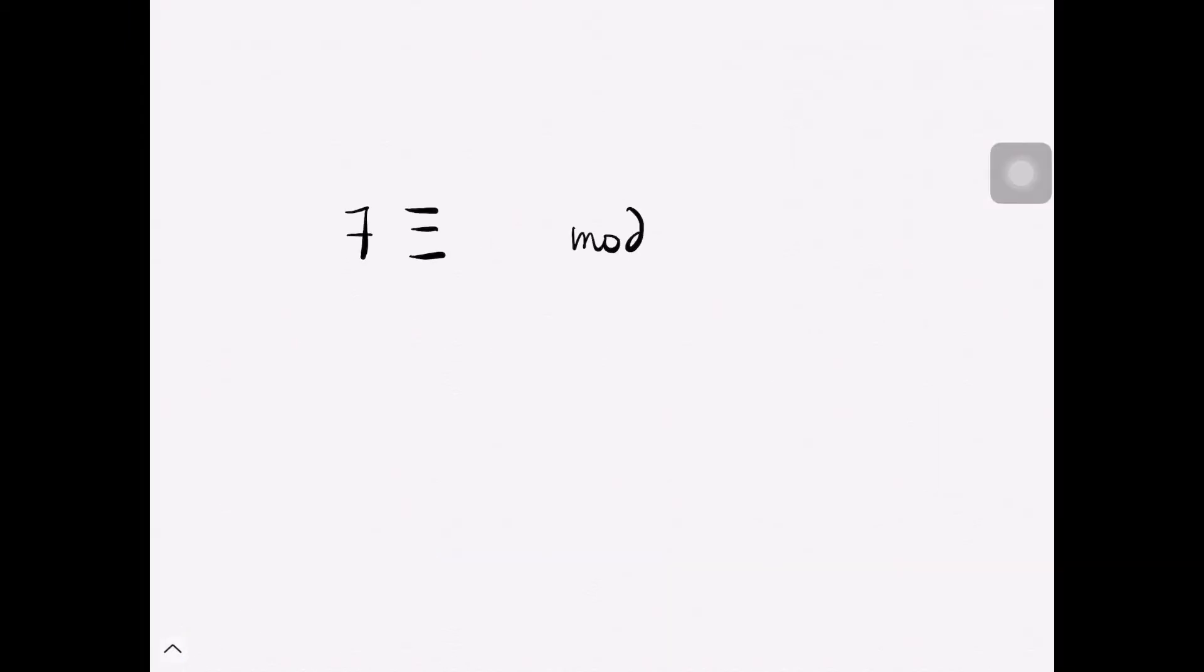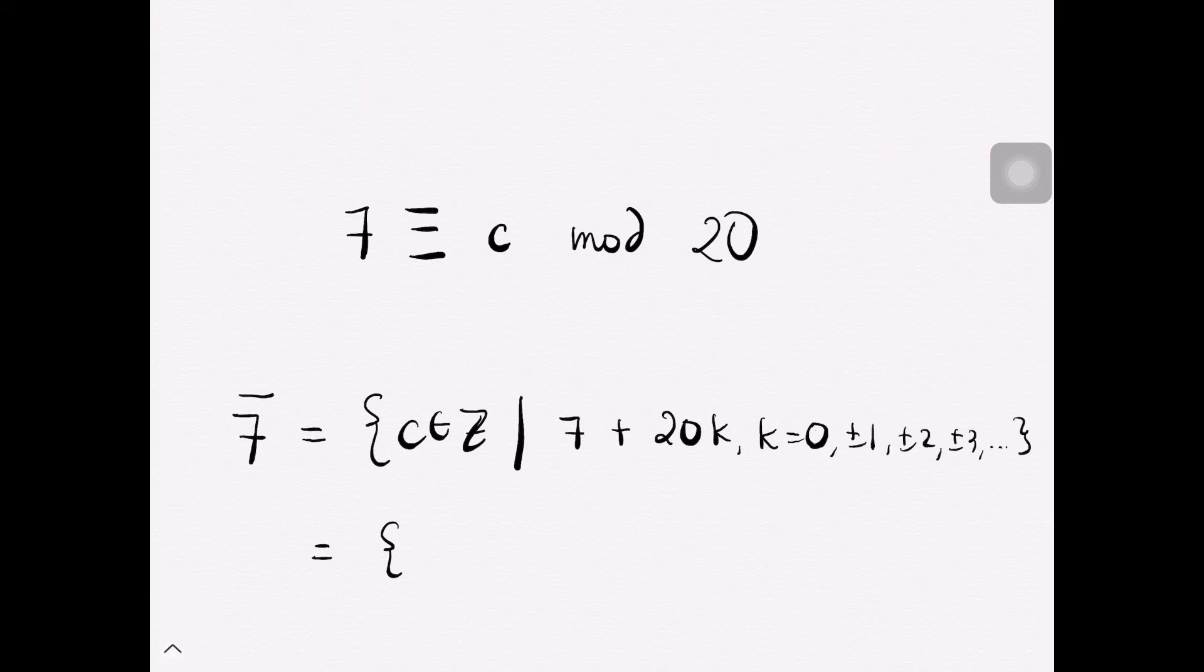So for us to know the values that would satisfy 7 modulo 20, this would actually be the equivalence class of 7. That is, the values for C would satisfy 7 plus 20K, where K would be equal to 0, plus or minus 1, plus or minus 2, and so on.